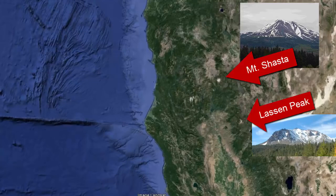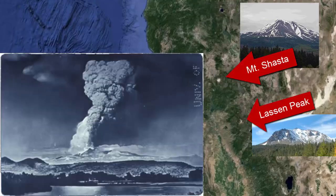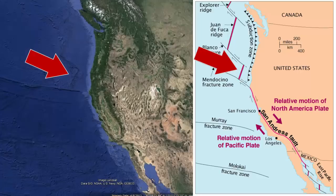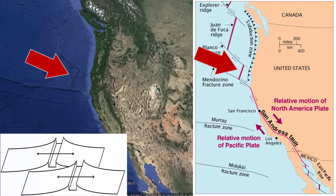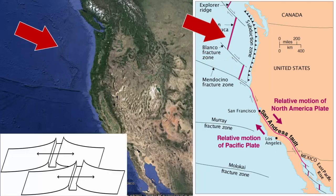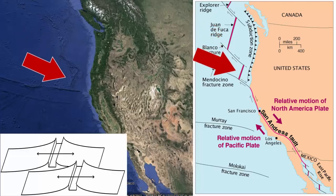The most recent eruption in that area was the explosive eruption depicted in this image of Mount Lassen on May 22, 1915. What happens to the seafloor spreading center off northern California? Like all such centers, it is offset at regular intervals by transform faults.